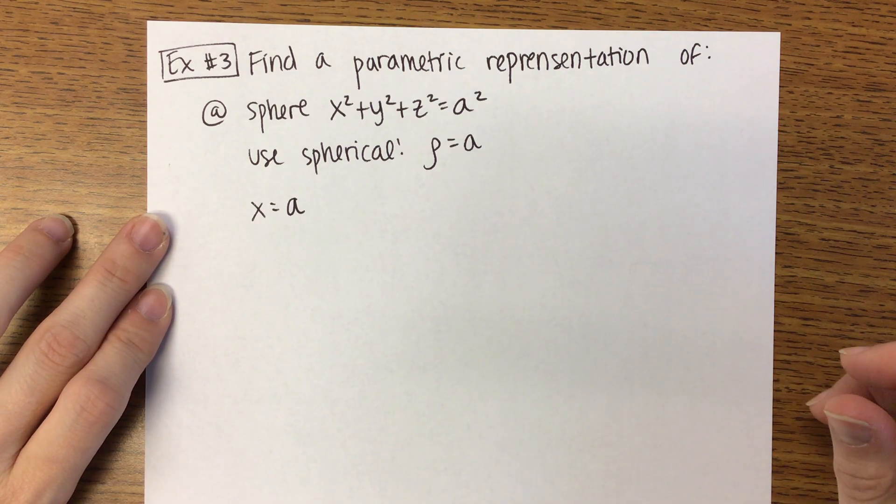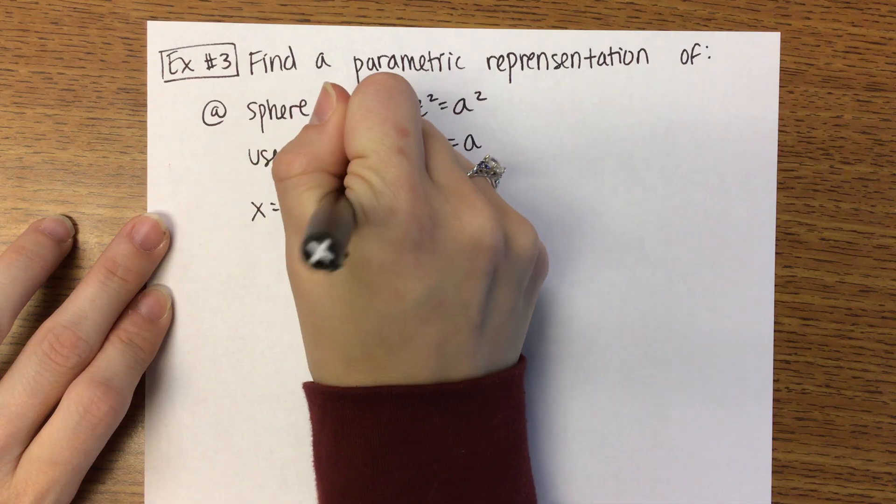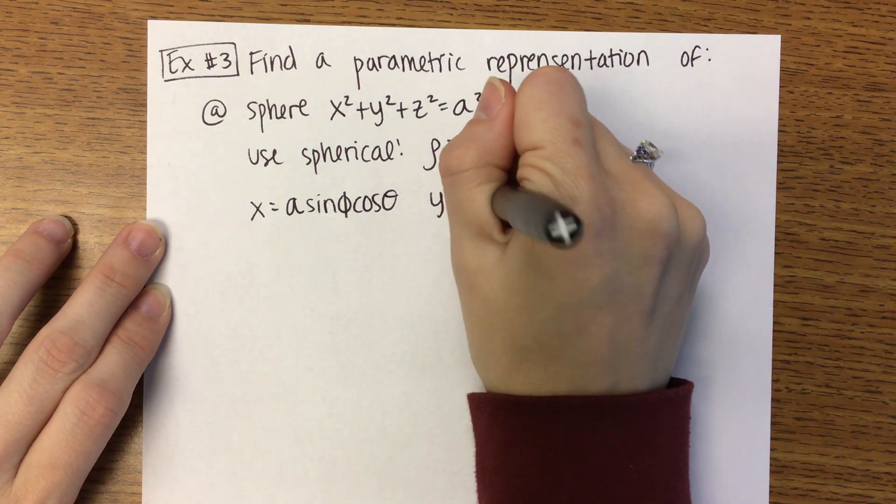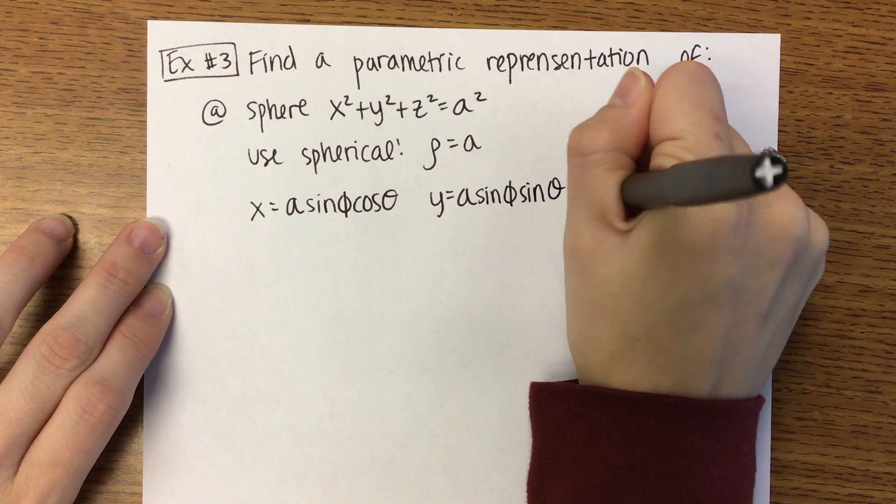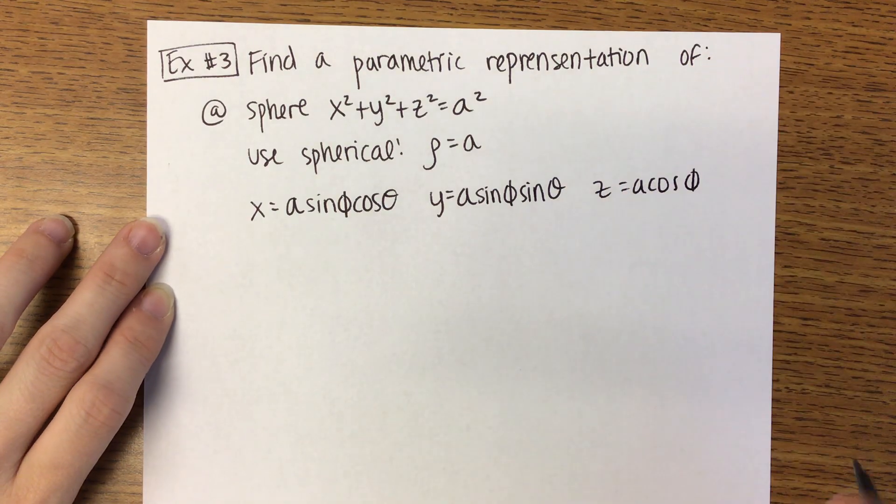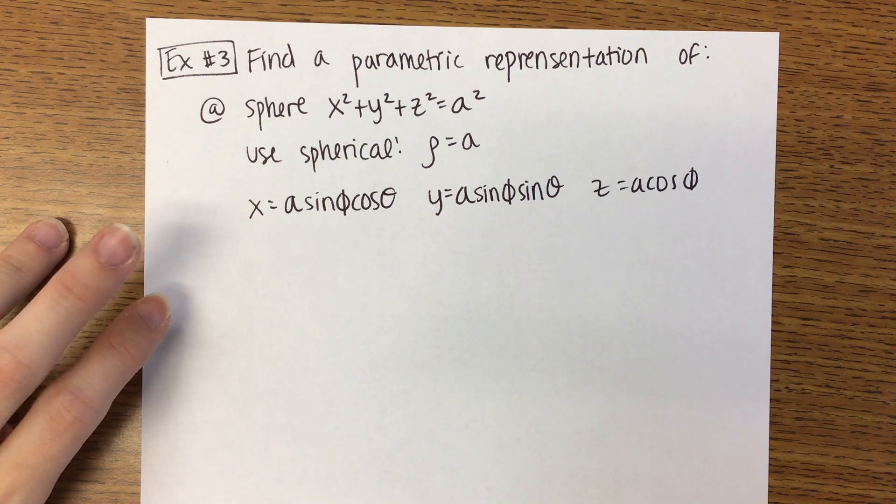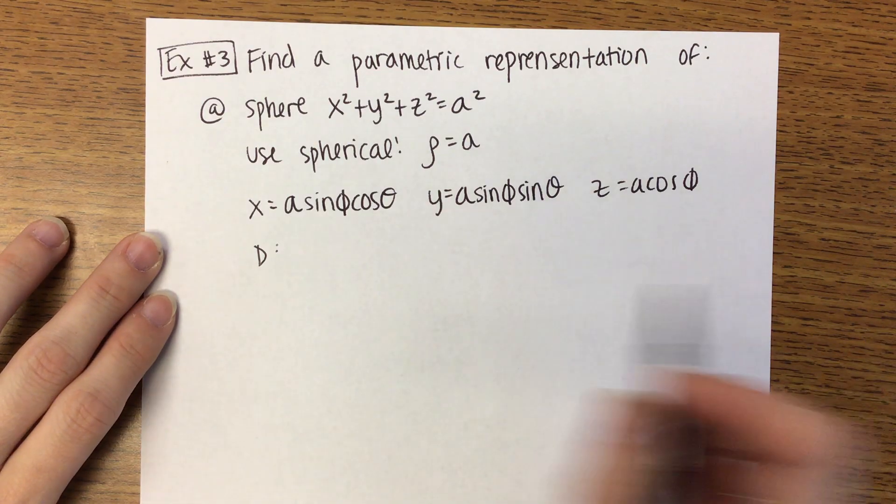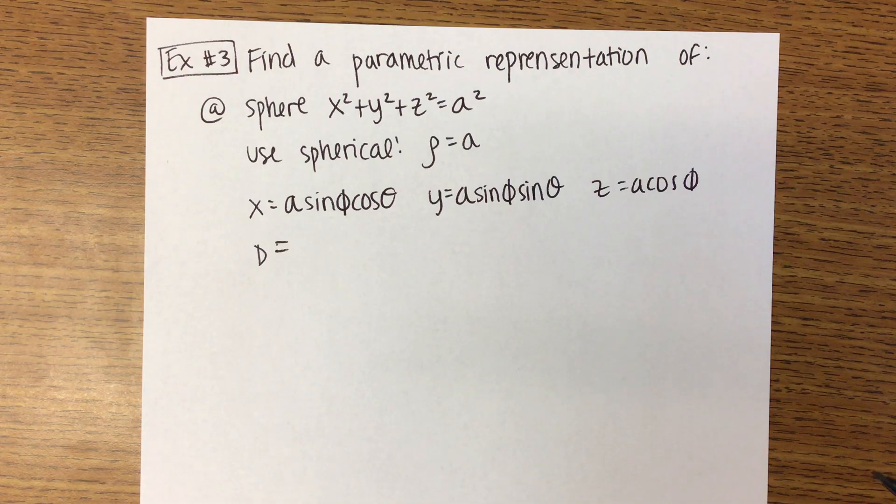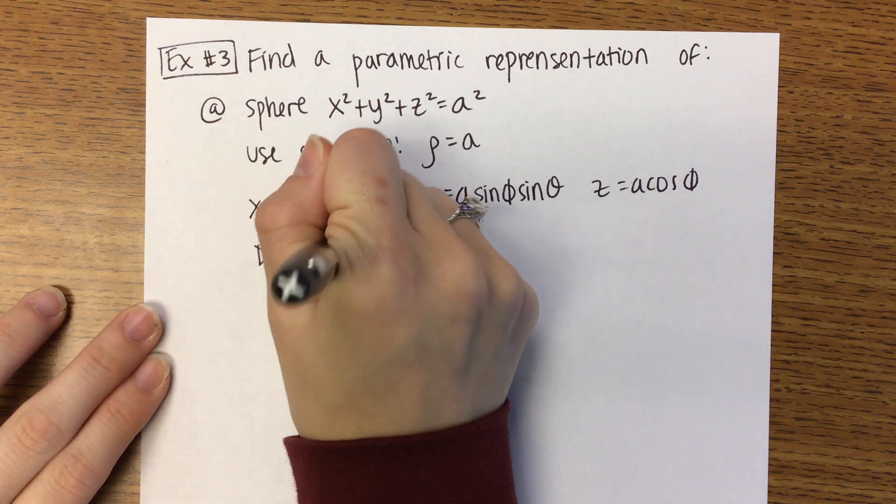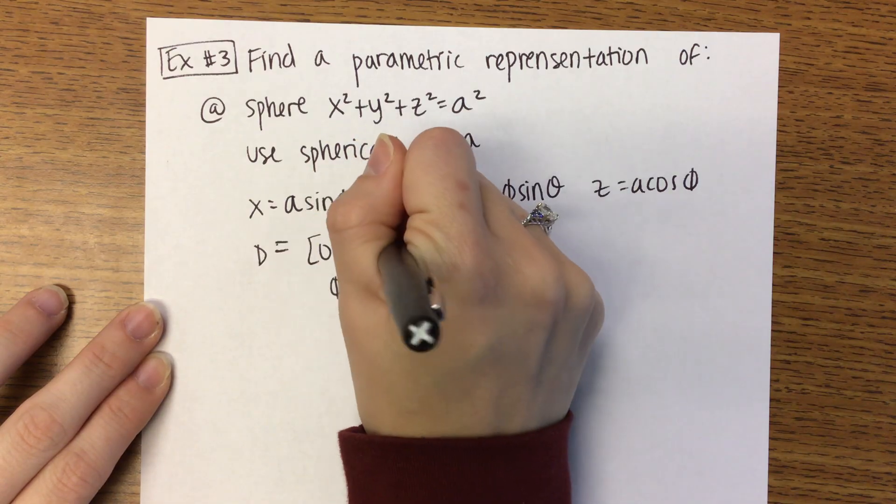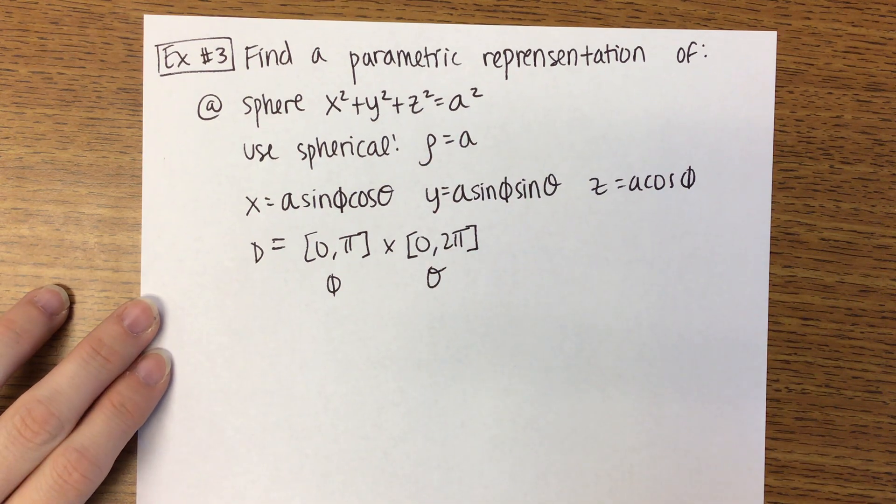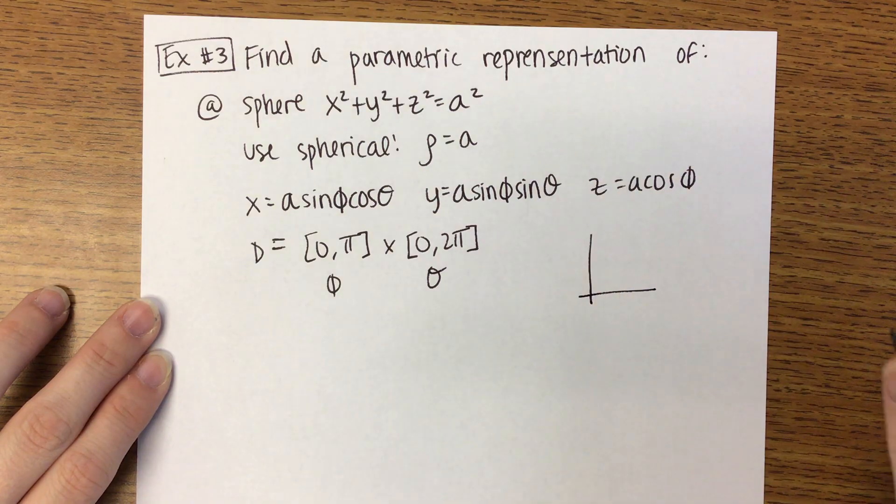We'll have X equals A sine phi cosine theta, Y equals A sine phi sine theta, and Z equals A cosine phi. I would really appreciate you giving some parameters here. Phi, what are the bounds on phi? Zero to pi. Theta zero to two pi. So then if you wanted to look at what D looked like, if you were to graph D.